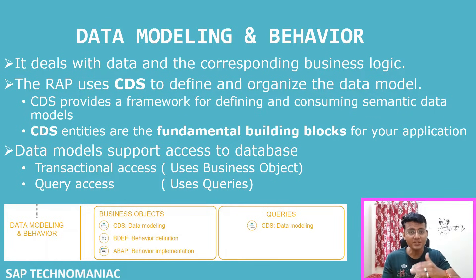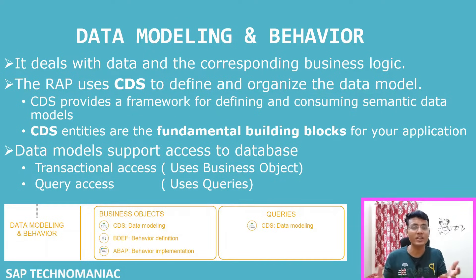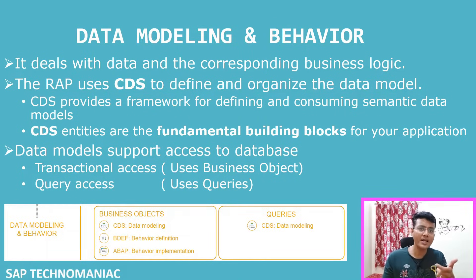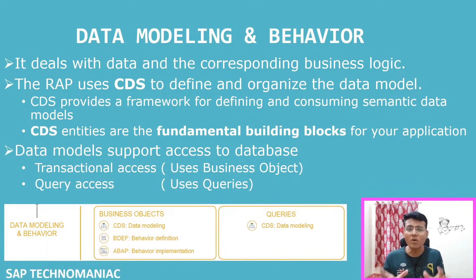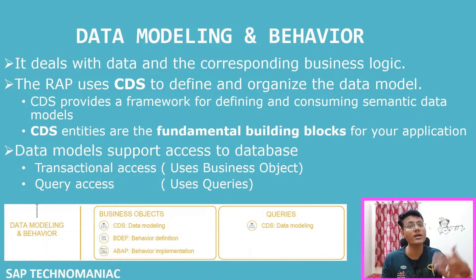This first part deals with defining the data and corresponding business logic. First, we define the data model - we have data in different tables and on top of that we create the data model using CDS. CDS is the fundamental building block for creating any RAP application because it provides a strong framework for defining and consuming a semantic data model in a format understandable to whoever is consuming it.